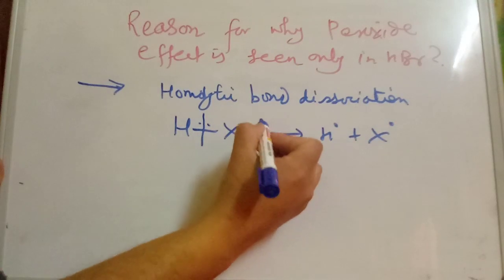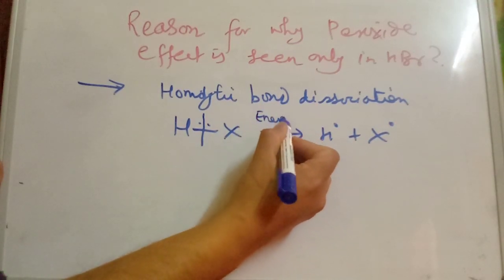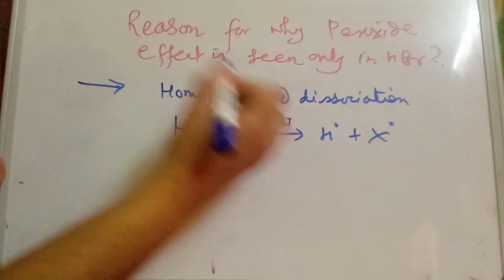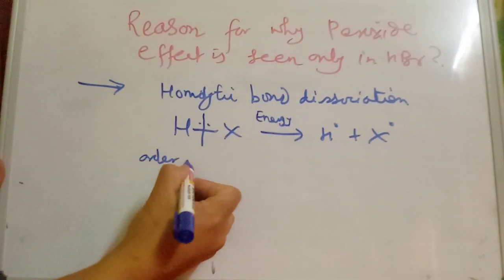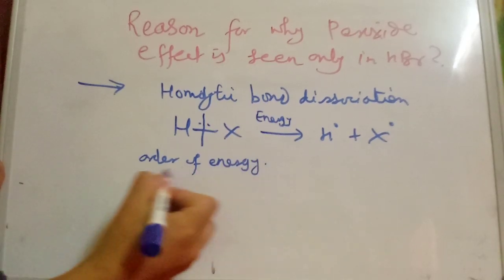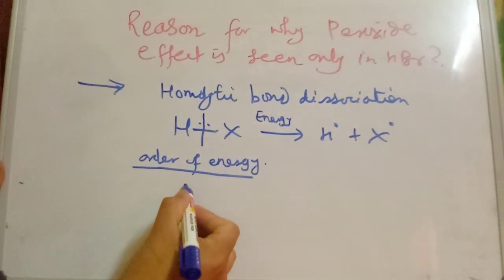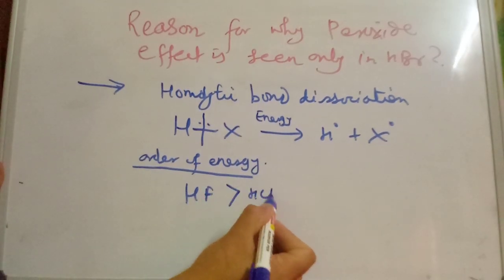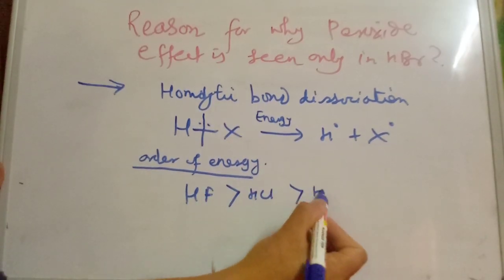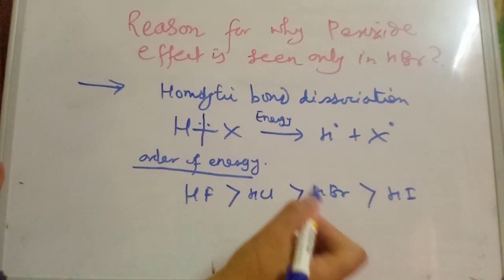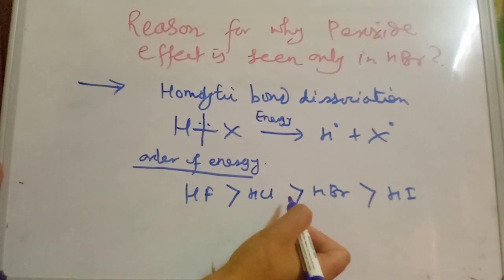This energy is called homolytic bond dissociation energy. The order of homolytic bond dissociation energy is: HF is the highest, then HCl, then HBr, then HI — so HF > HCl > HBr > HI.